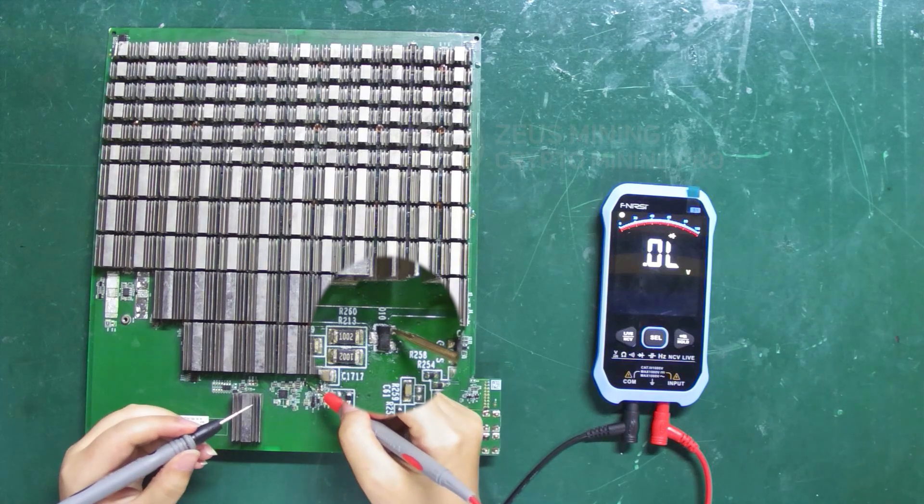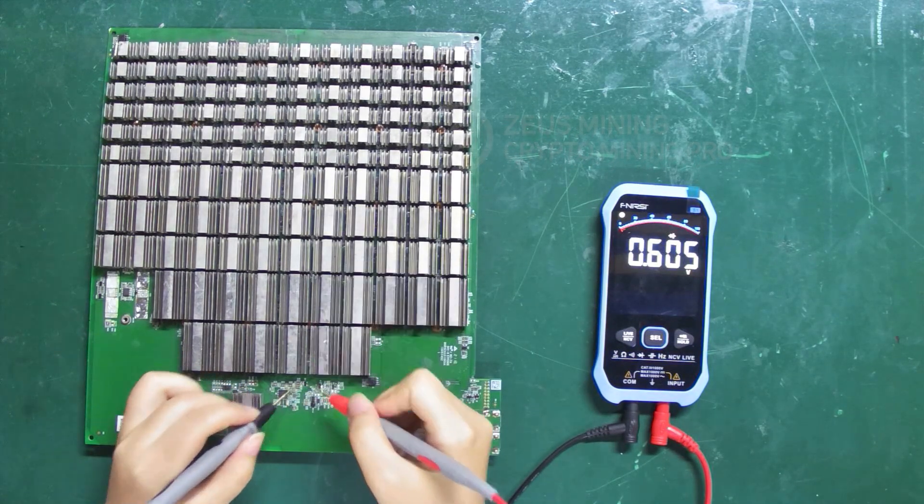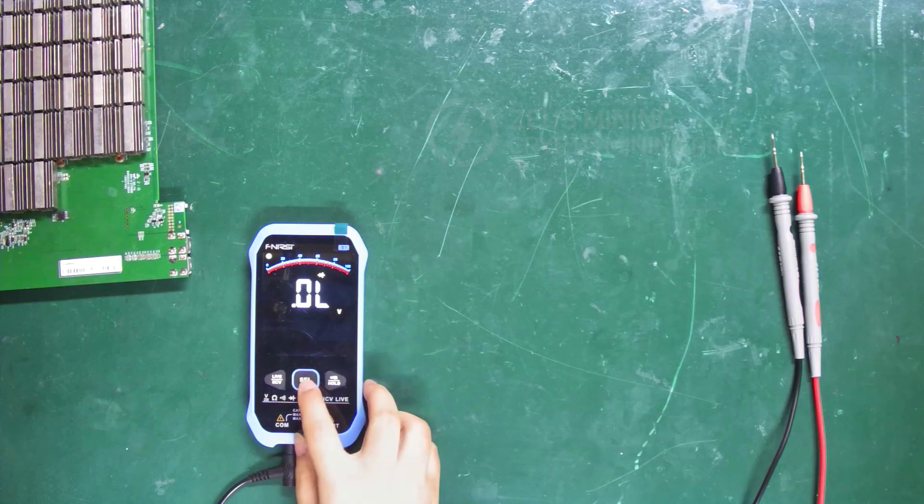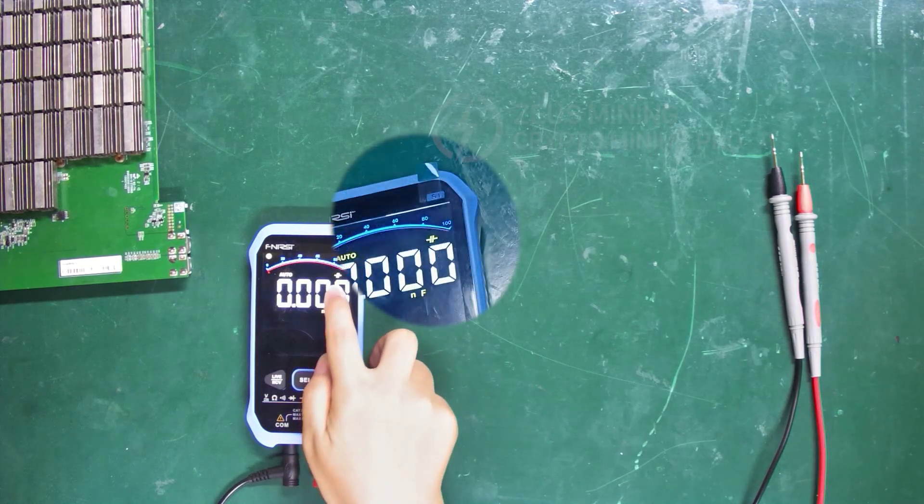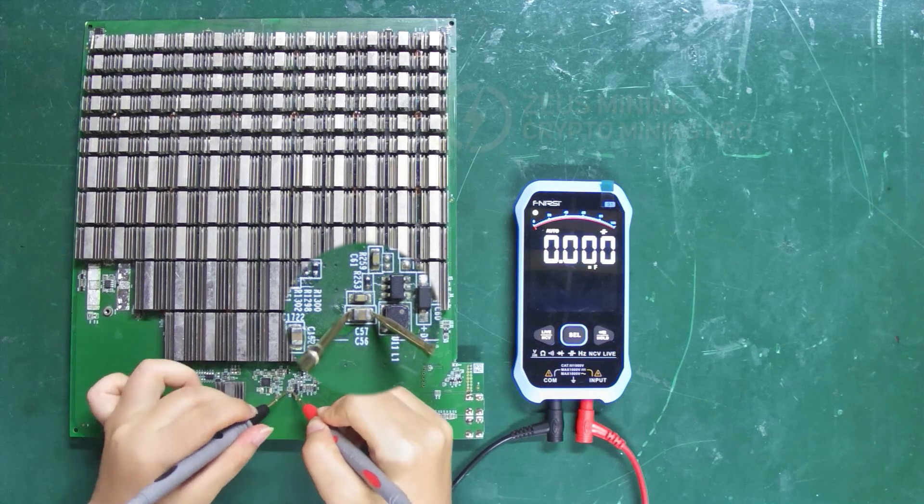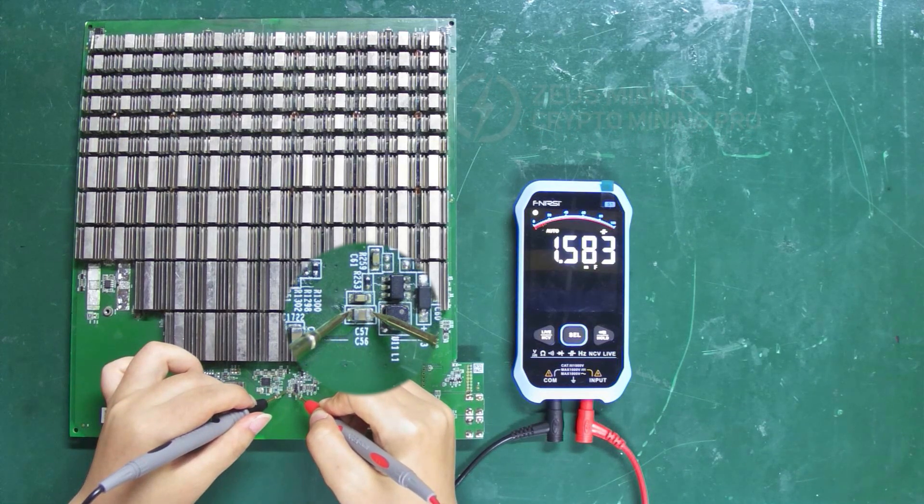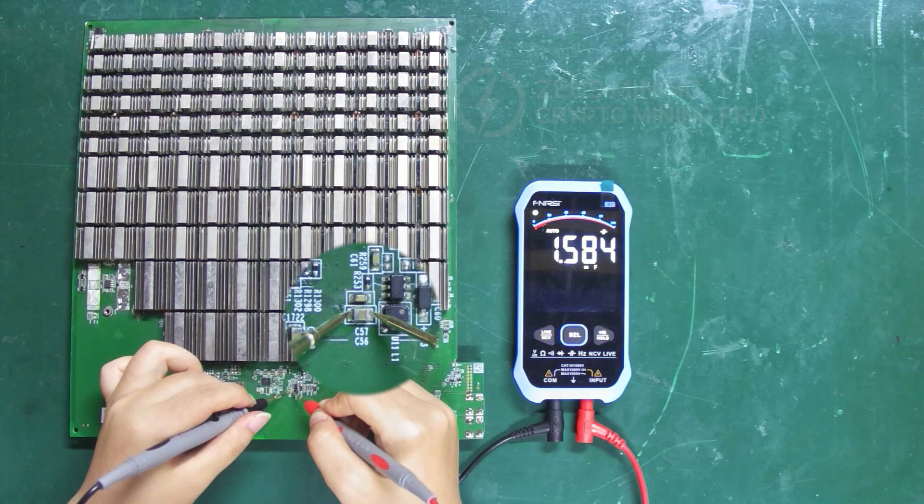Press it again and we can switch to the capacitor gear. Measure capacitor C56 here. Similarly, its capacitance will be displayed on the screen.